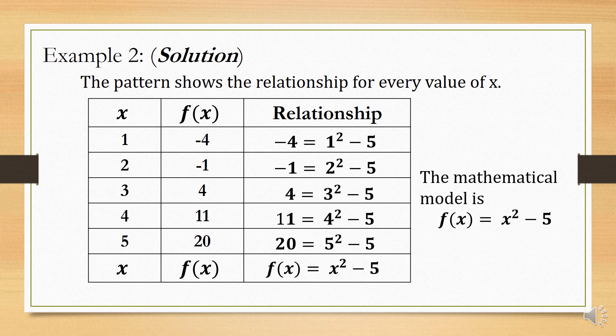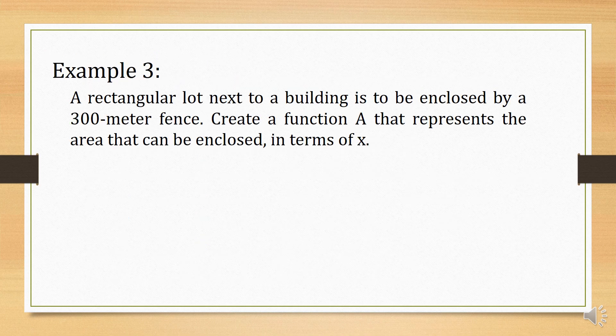The mathematical model is f of x is equal to x squared minus 5. Example number 3: a rectangular lot next to a building is to be enclosed by a 300-meter fence. Create a function A that represents the area that can be enclosed in terms of x. Before we can create a function, we need to illustrate the given problem first.